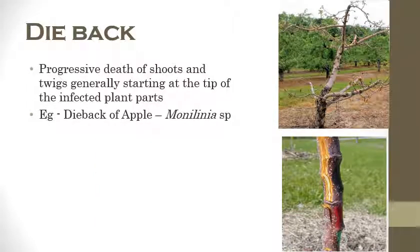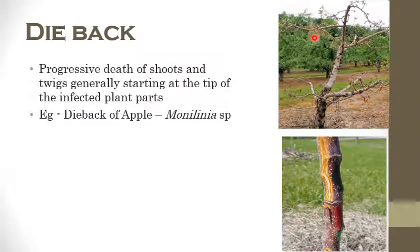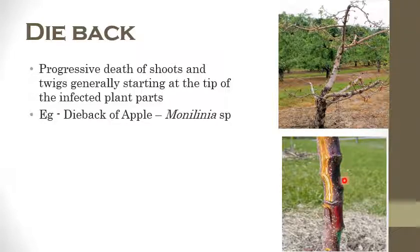The next one is die back — the progressive death of shoots and twigs of infected plants. No leaves will be present and the bark will look weakened, almost as if the plant has no strength. Eventually the plant looks almost vanished. The example is die back caused by Monilinia species. Die back can also be caused by bacterial pathogens.